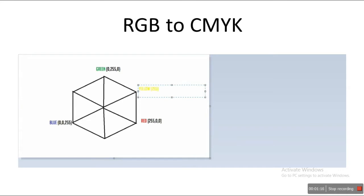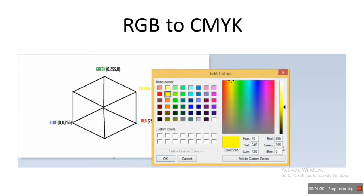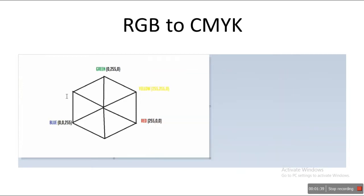So yellow is 255, 255, 0 — because red is there, green is there, but blue is not there. Now the next color we'll find out is blue plus green. So what we'll do is, we'll take red as 0, green as 255, and blue as 255. You can see over here what we get — we get cyan.